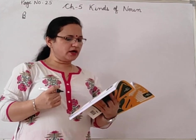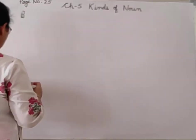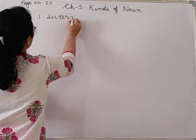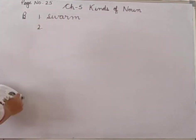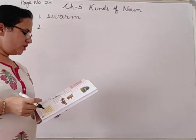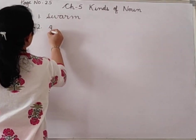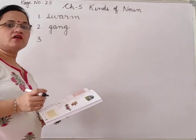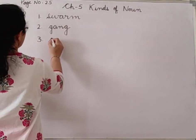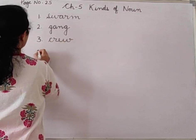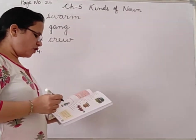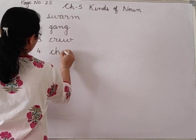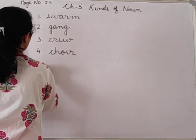First: 'Rohan was attacked by a dash of bees.' The collective noun for bees is swarm — S-W-A-R-M. Swarm of bees. Second: 'A dash of thieves robbed the bank.' The collective noun for thieves is gang — a gang of thieves. Third: 'A dash of sailors.' The collective noun for sailors is crew — crew of sailors. Fourth: 'A dash of singers sang the welcome song.' The collective noun for singers is choir — choir of singers.